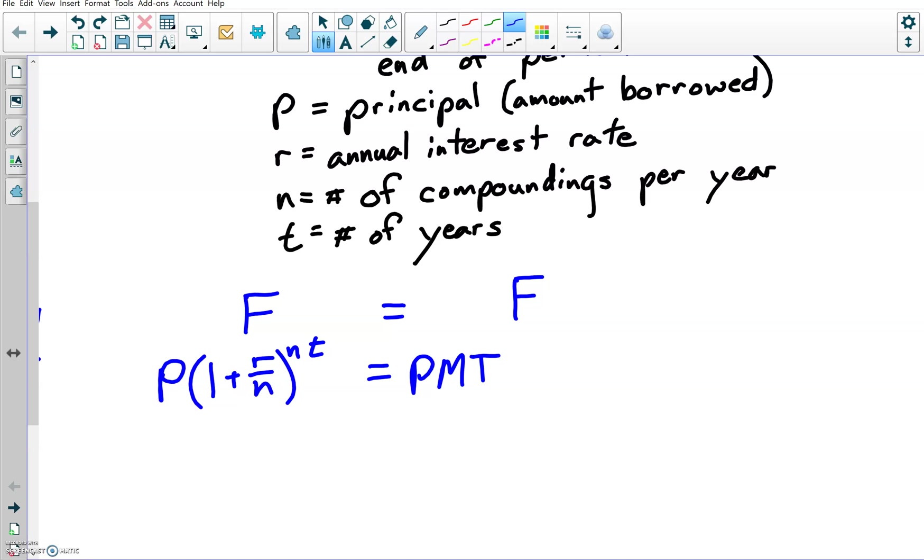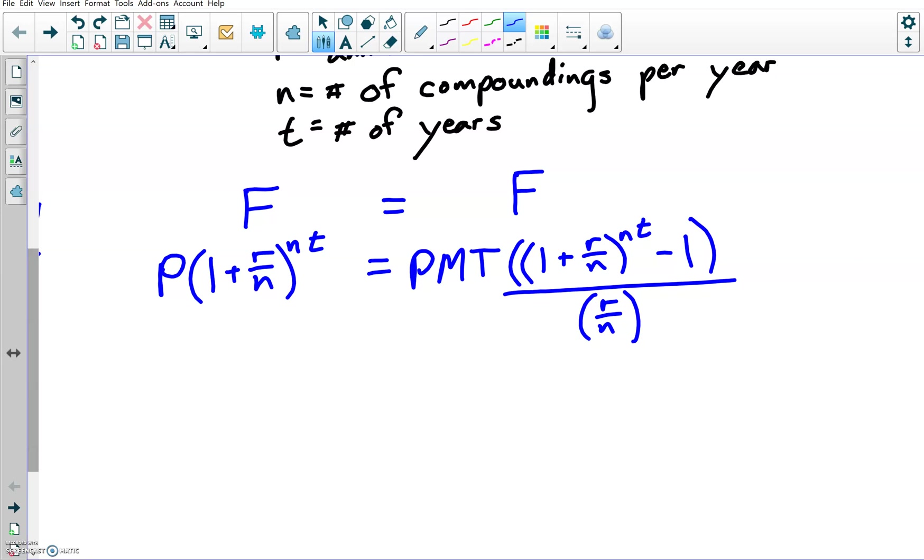So the annuity, you're going to take this payment and multiply it by 1 plus r over n raised to the nt power, n times t more importantly, and then minus 1 and then all over that r over n. So both of these amounts will be the same and it will allow the bank to realize what it would have earned just by putting that loan amount into compound interest by having you pay them some money over time that they will turn around and put into an annuity account.